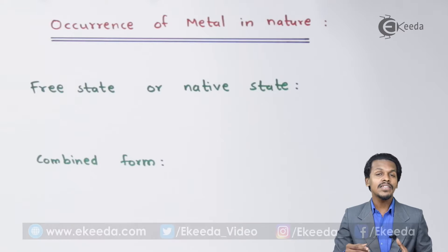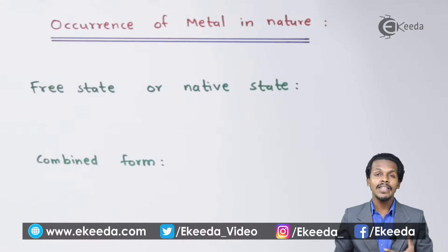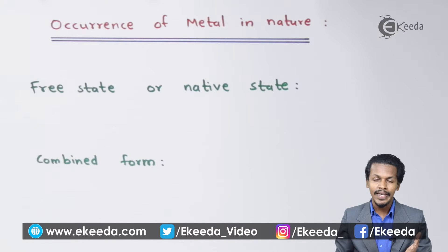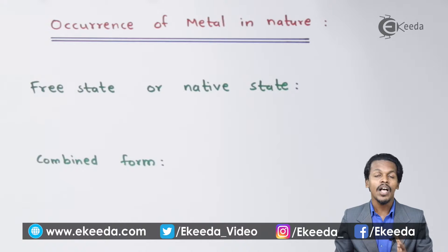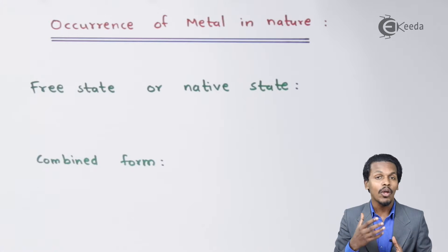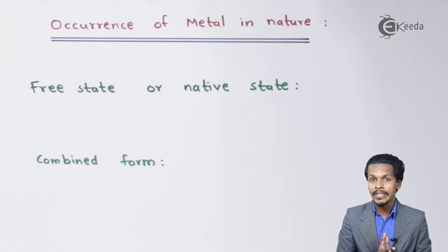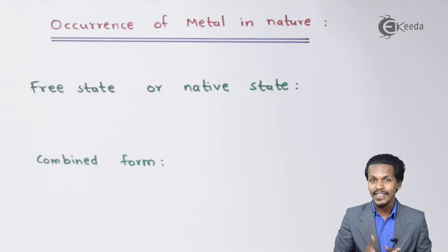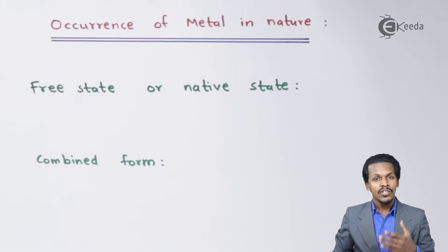This chapter is the extraction of metal, which we could also call metallurgy. We are going to talk about how metals are extracted from their ores and minerals, and how metals exist in nature.